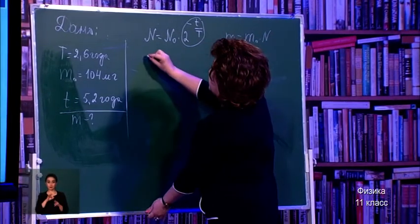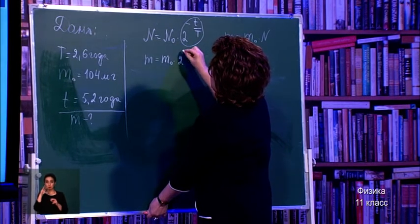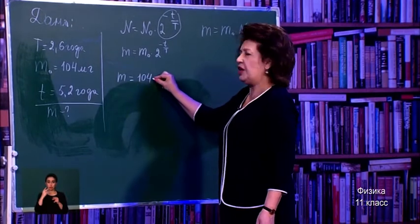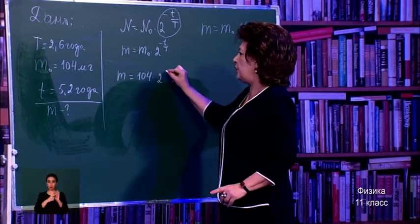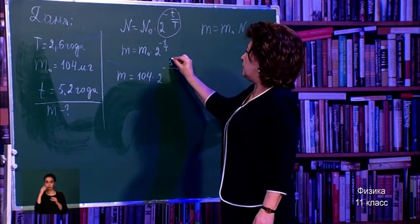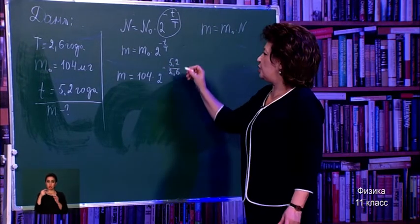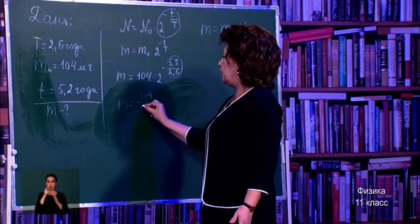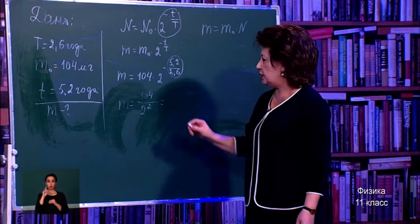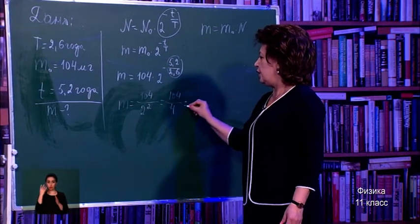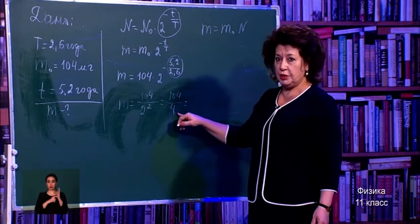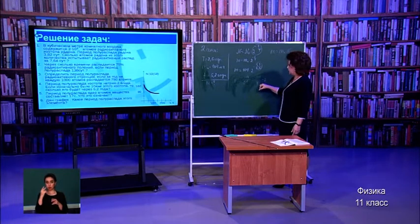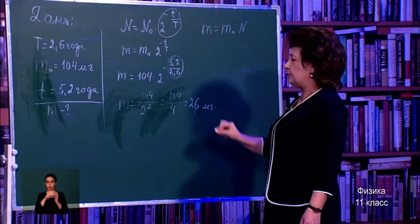Applying the formula: m = 104 × 2^(−5.2/2.6) = 104 / 2^2 = 104 / 4 = 26 mg. The answer is 26 milligrams.